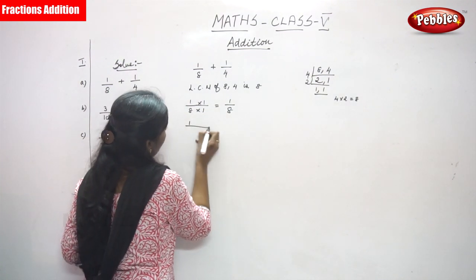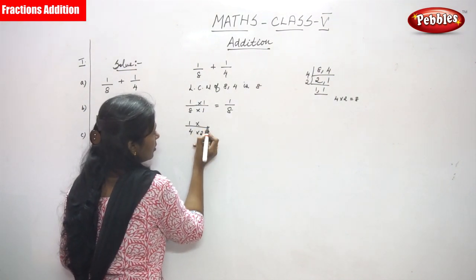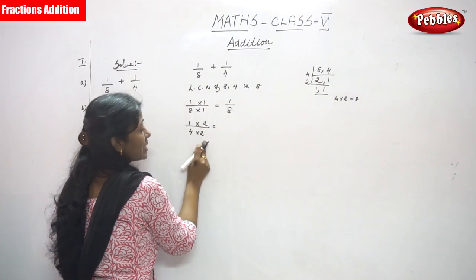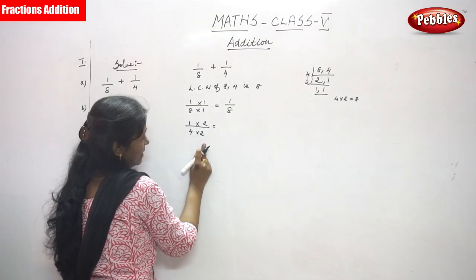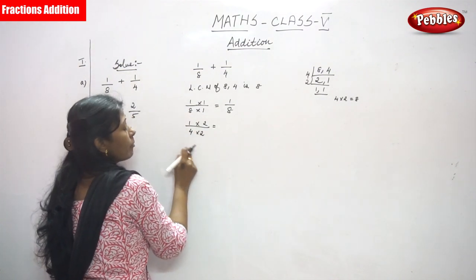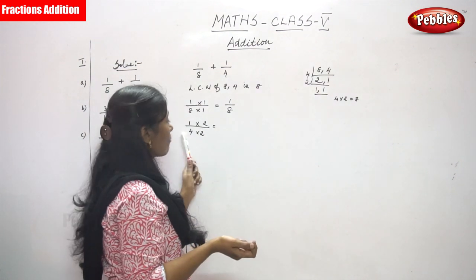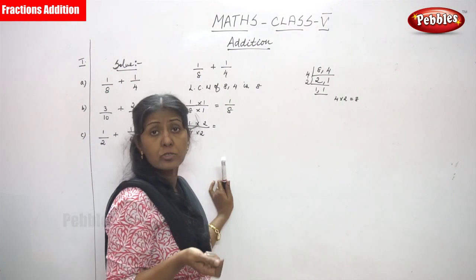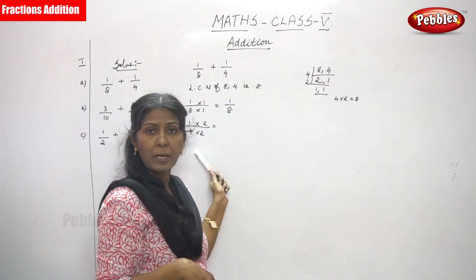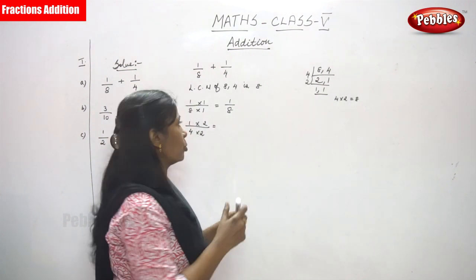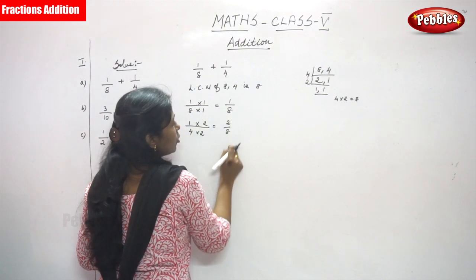The next fraction is 1 by 4. I am going to multiply by 2. Why? Because the common denominator or LCM is 8. To make this denominator 4 into 8, I have to multiply by 2. If the denominator is multiplied by 2, the numerator is also multiplied by 2, giving 2 by 8. Now the denominators are the same.